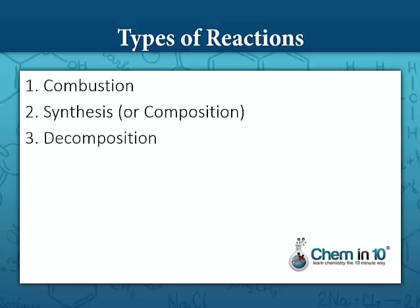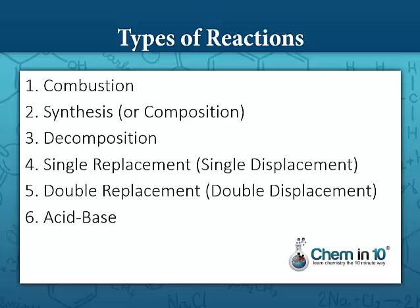There are basically six different types of chemical reactions: combustion, synthesis, decomposition, single replacement, double replacement, and acid-base, which is actually a particular type of a double replacement reaction.